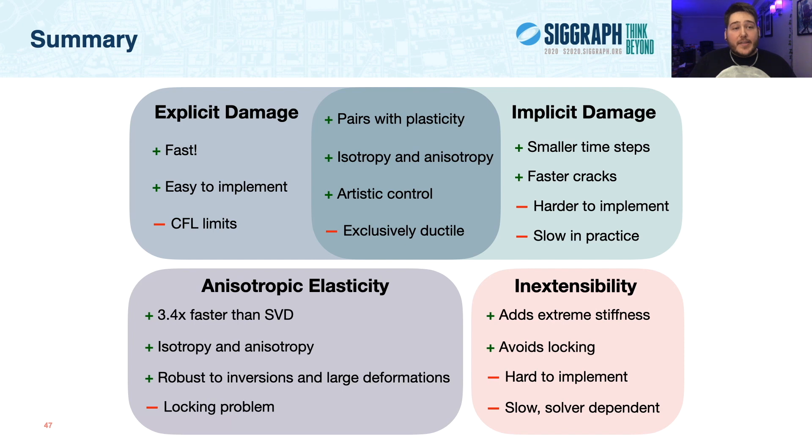So in summary, our explicit damage is fast and easy to implement, making artistic control easier, but it does have limitations on time step and crack speed due to the CFL condition. Conversely, our implicit damage can handle small time steps and fast cracks, but it's harder to implement. But overall, our damage pairs well with plasticity, models both isotropy and anisotropy, has myriad knobs to turn for artistic control, but is limited to just ductile fractures. More specifically, while anisompm completely eclipses the success of PFFMPM, it cannot produce the type of debris-laden fractures produced by CDMPM's non-associative cam clay plasticity approach to fracture.